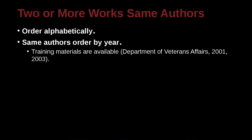Let's take a look at an example. Here we have: training materials are available (Department of Veterans Affairs, 2001, 2003). This organization, Department of Veterans Affairs, is not a person, but when we don't have a person, we can use the name of the organization. The comma and two years mean we have two research papers drawn from, ordered by year — 2001, the earliest year, then 2003, the later year. So you order it by the year.